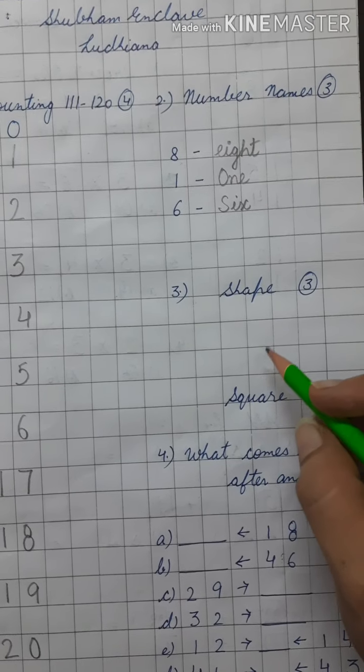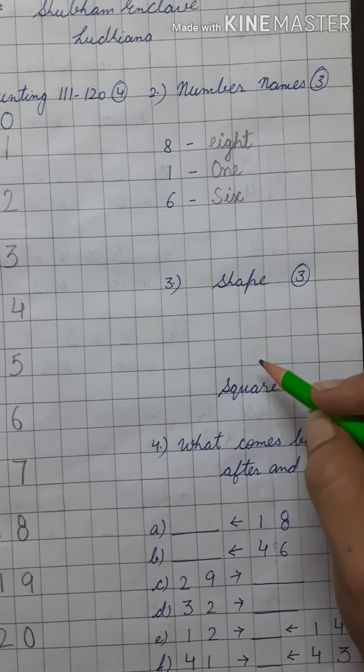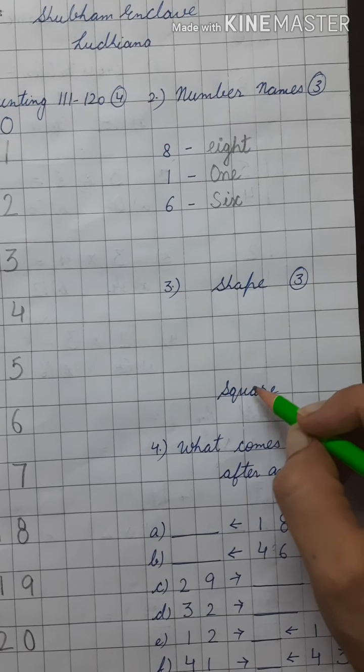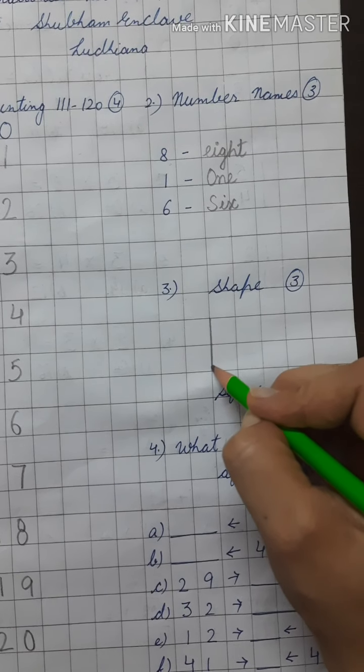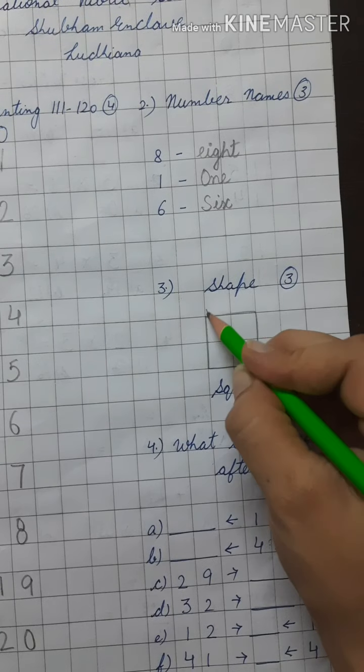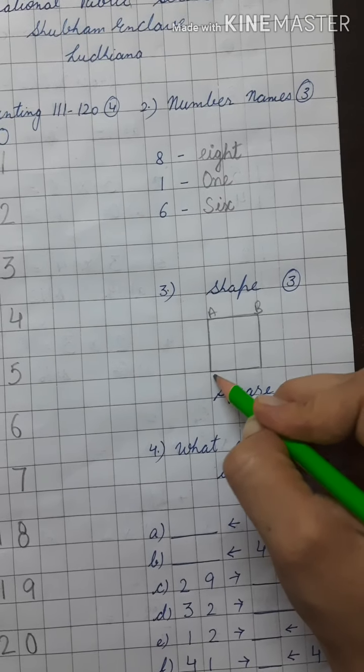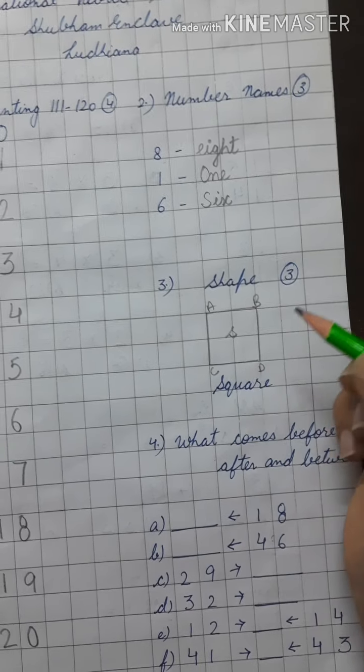In next question, you have to draw any shape which will be asked from you. Here I am going to draw a square shape. Like this. A, B, C, D. And write S in the center.